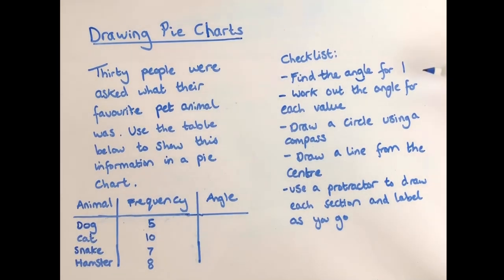Our checklist says that we're going to find the angle for one, then we'll work out the angle for each value. We'll draw a circle using a compass, draw a line from the centre and use a protractor to draw each section and label as you go. If you don't have a compass or a protractor you will need to get one to be able to take part in this lesson.